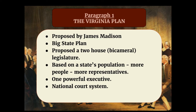Both of those houses would be based on a state's population — in other words, the more people you have in your state, the more representatives you would get in the new legislative branch of government. Virginia was a big state, so it was to Virginia's advantage to get a lot of representation in the new legislative branch because then they would have more influence on making laws. The Virginia Plan also proposed a single powerful executive and a national court system, making it a stronger government plan that favored larger states. If you have all of these bullet points in your first paragraph, you are going to be in good shape.